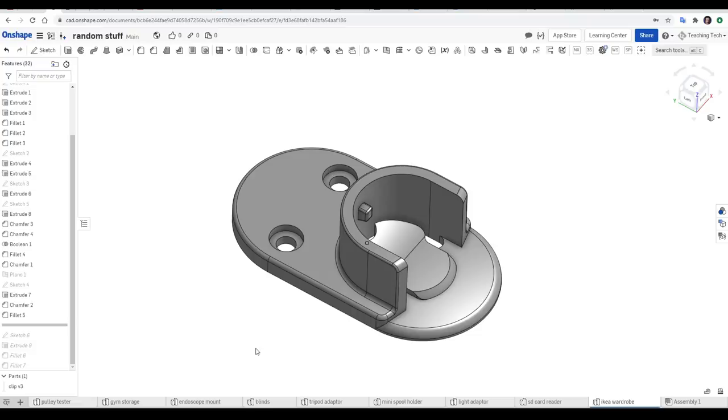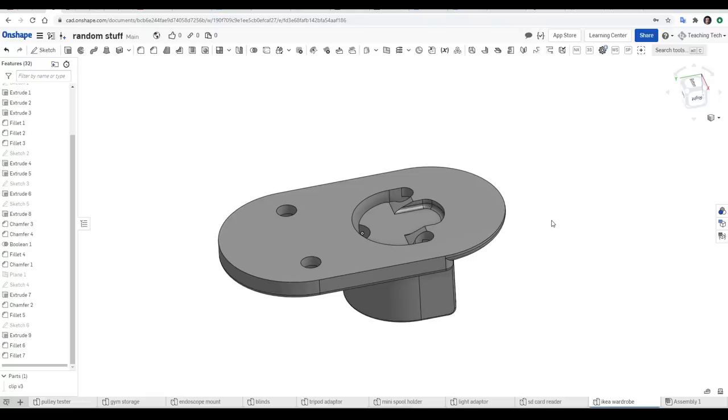I'll then add the little bump that locks the pole in place before turning my attention to the underside to hollow out the shape and create the room required for it to flex.